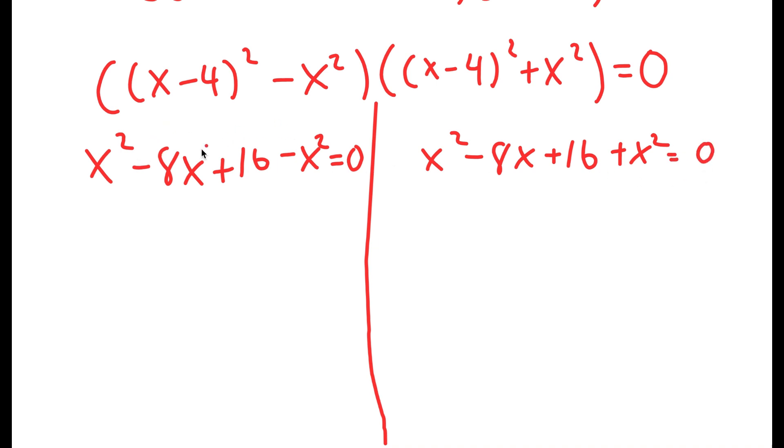So let's first start off with our left-hand side equation. I can start off by canceling these two out. So I get negative 8x plus 16 equals 0, meaning 8x is equal to 16, and x is equal to 2. So this is one solution.